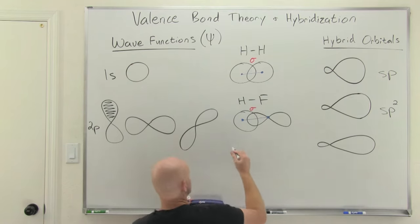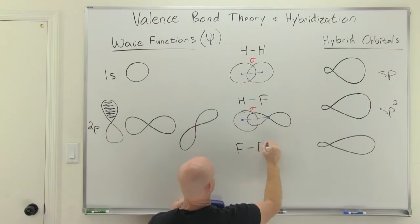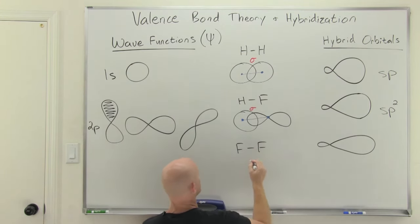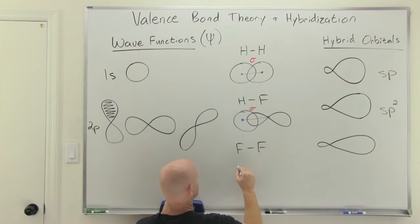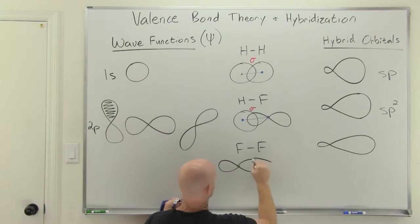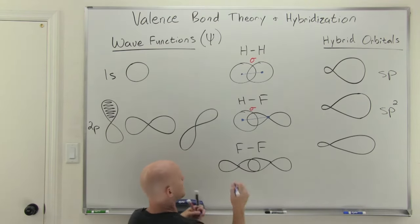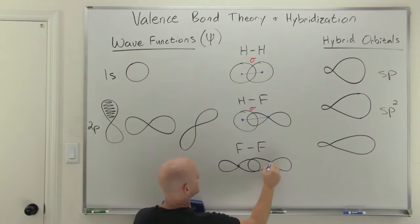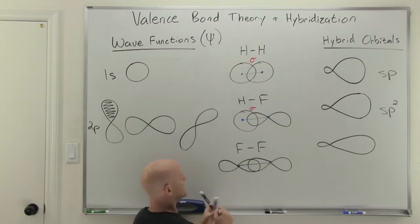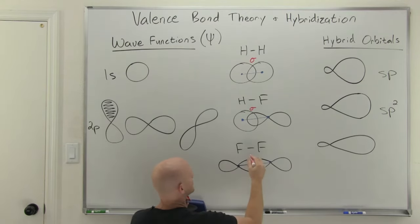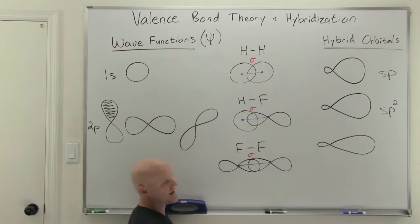Looking at F2: both fluorines have their unpaired electrons in p orbitals, and those p orbitals overlap end-to-end. Once again, that overlap occurs along the internuclear axis, and so we refer to this as sigma overlap.